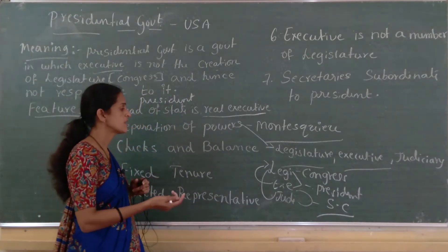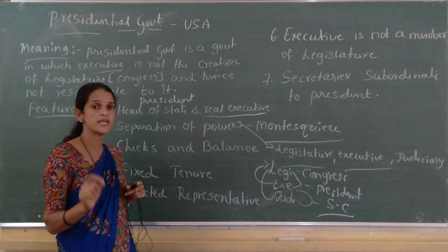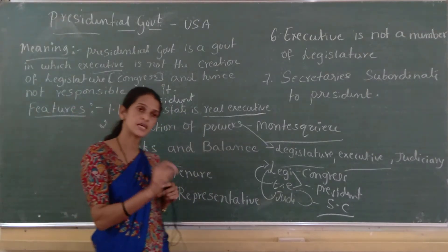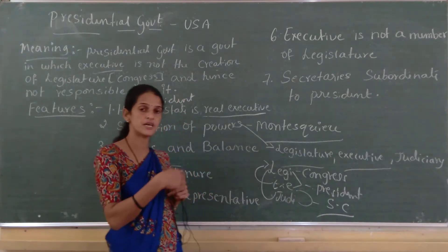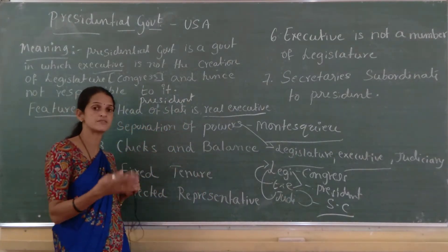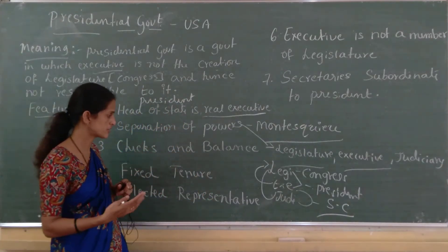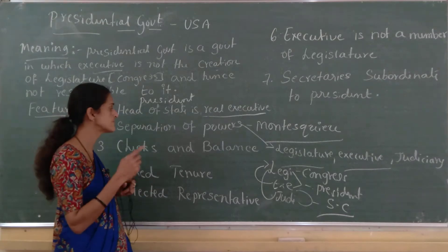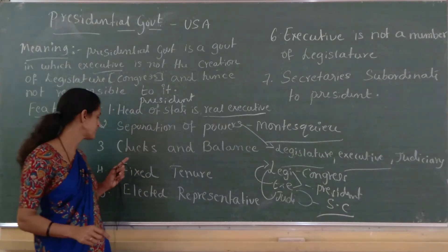In this way, each organ of the government checks the power of the other organs, thereby controlling the powers of the government. This is called the check and balance system.